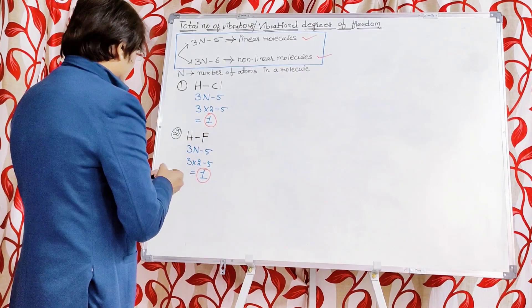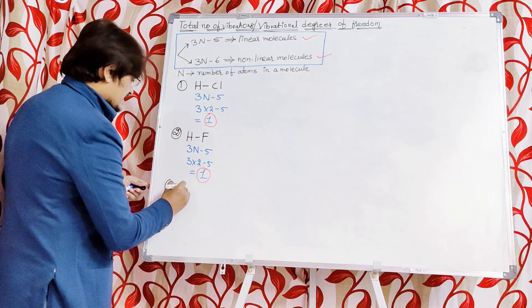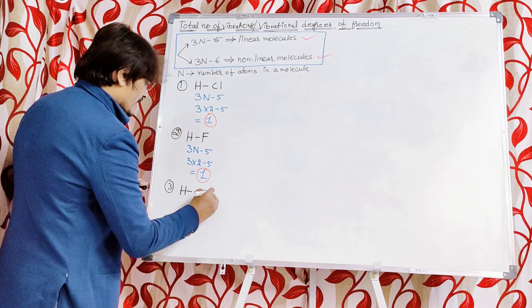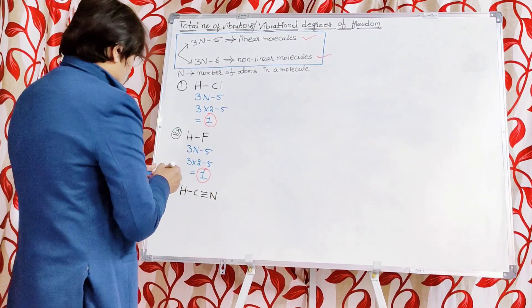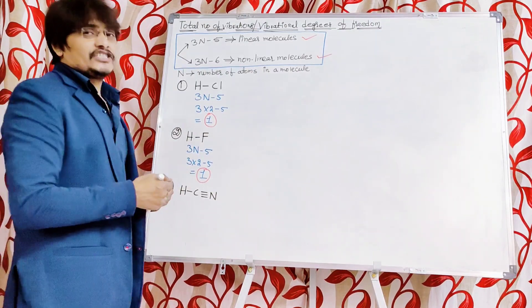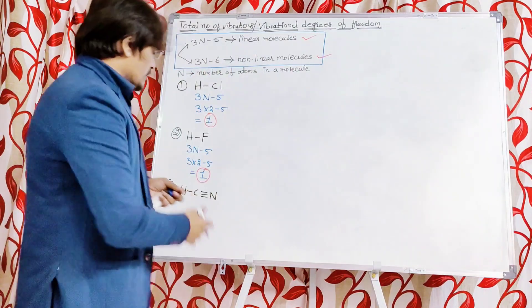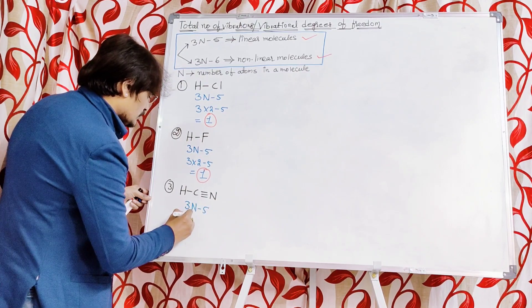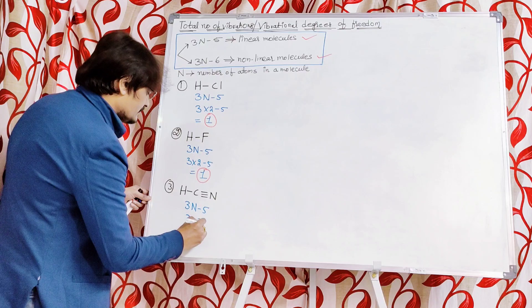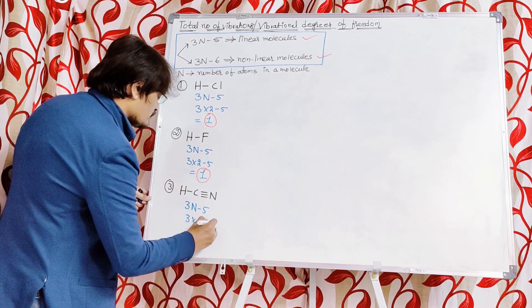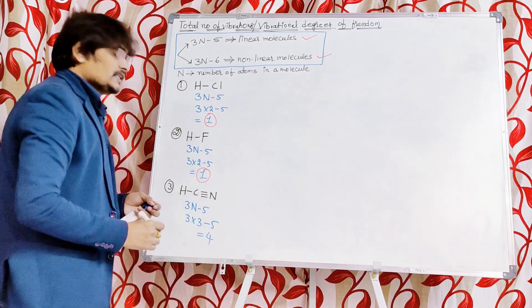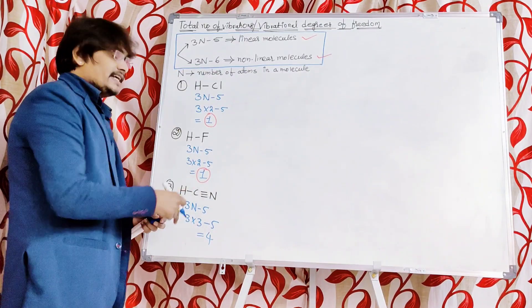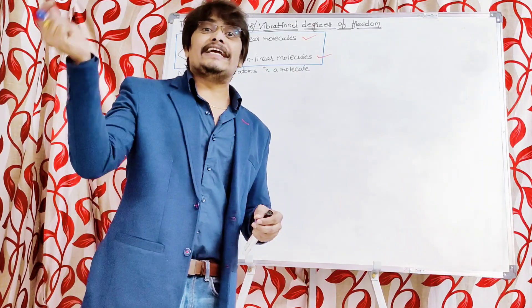Now let us consider HCN — hydrogen cyanide. The structure is H–C≡N. This is also a linear molecule. Based upon the structure we can decide whether the molecule is linear or nonlinear. Since it is a linear molecule, the same formula is applicable: 3N minus 5. There are 3 atoms, so 3 into 3 minus 5 equals 9 minus 5 equals 4. The total number of vibrations possible in HCN is 4, whenever IR radiation is irradiated on it.